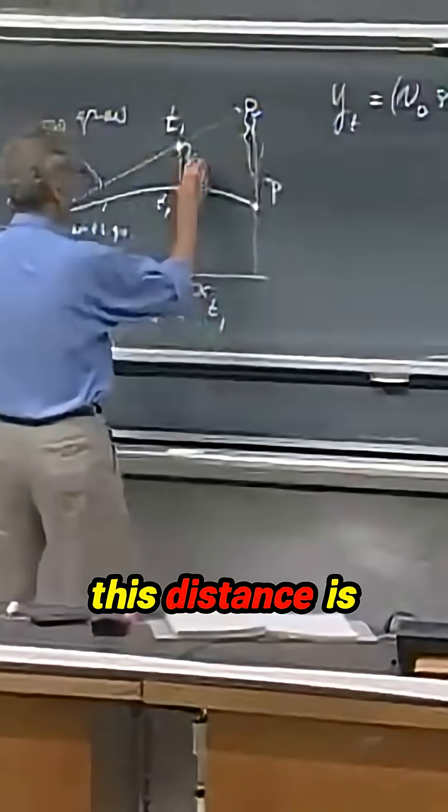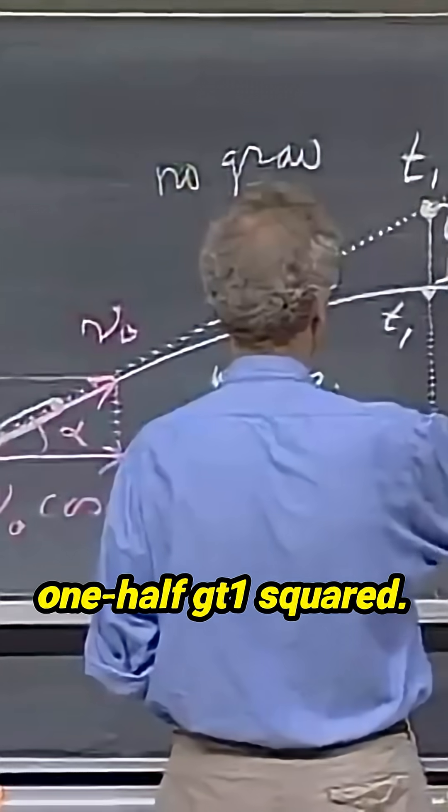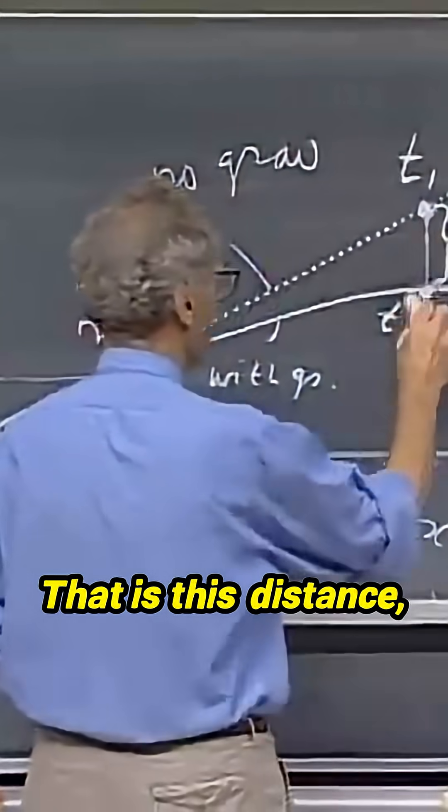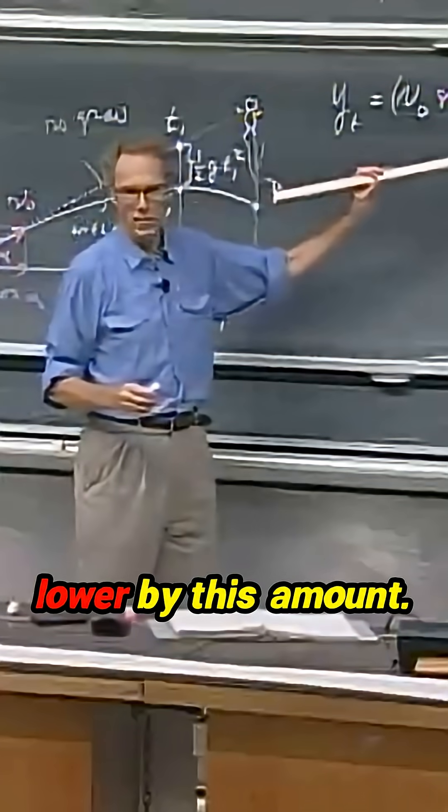Therefore, this distance is one-half gt1 squared. That is this distance, because this curve is lower by this amount.